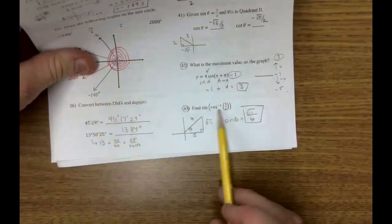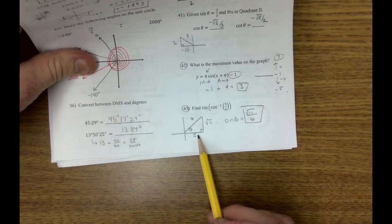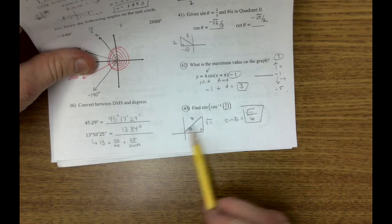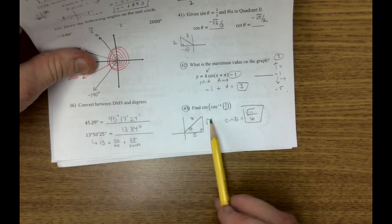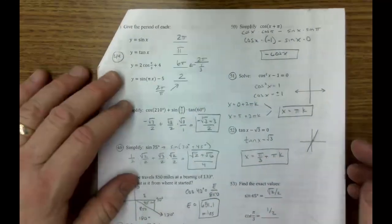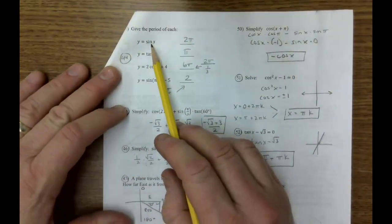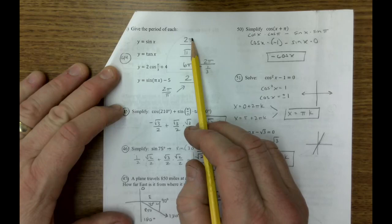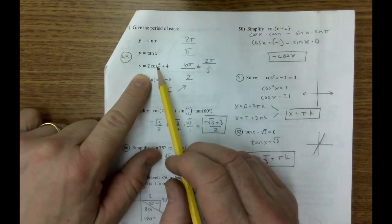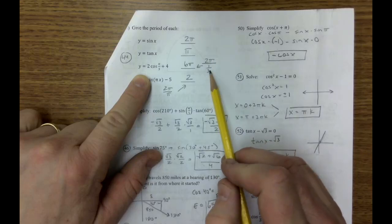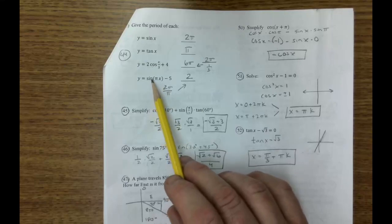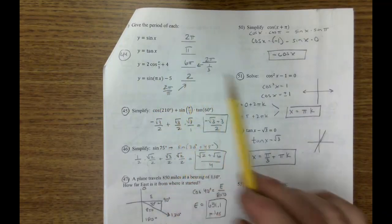43, draw this triangle out. Cosine adjacent over hypotenuse. Pythagorean theorem for that. And then you can find sine value. Opposite over hypotenuse. 44, the period of each. Well, the period of sine is 2 pi. We memorized that. Period of tangent is pi. In this case, cosine is 2 pi, but we divide it by the b value. 2 pi divided by a third is 6 pi. In this case, we have 2 pi divided by pi is 2.